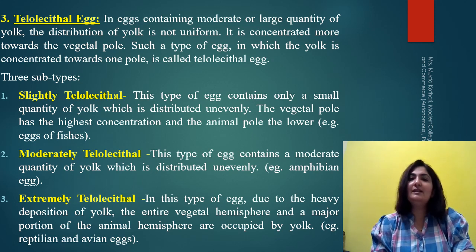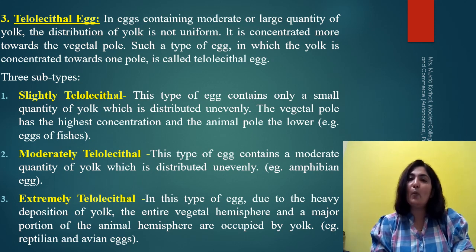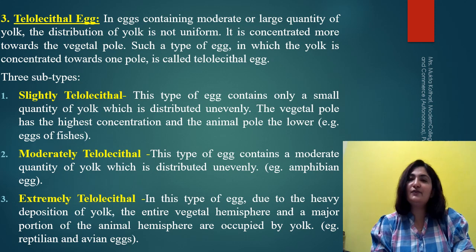The example of slightly telolecithal eggs is fish eggs. The second subtype is the moderately telolecithal type of egg; here the amount of yolk is moderate but again unevenly distributed. The vegetal hemisphere will have maximum yolk whereas the animal hemisphere will have lesser yolk. The example is amphibian egg cells.